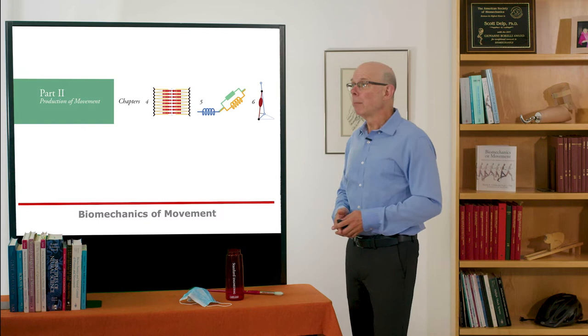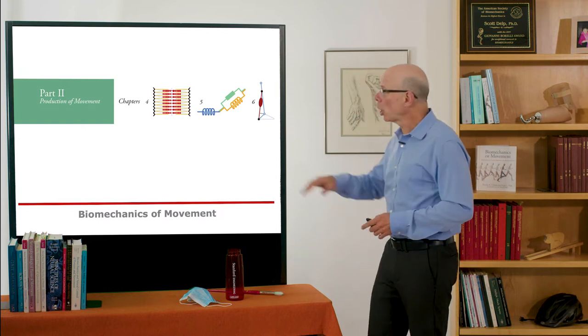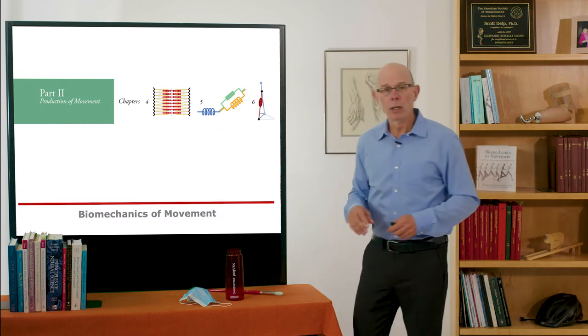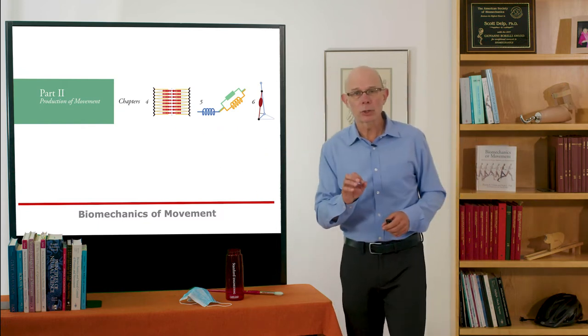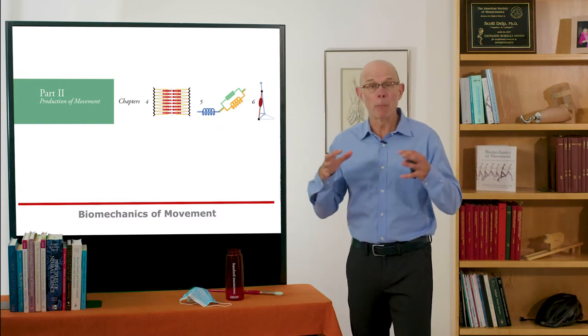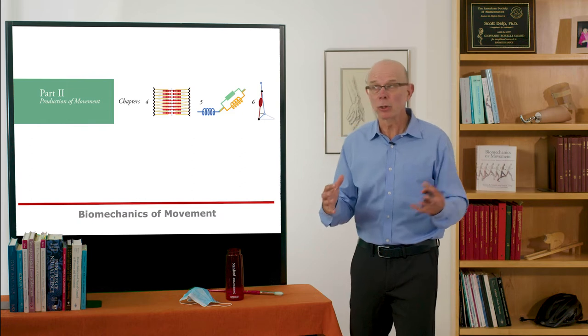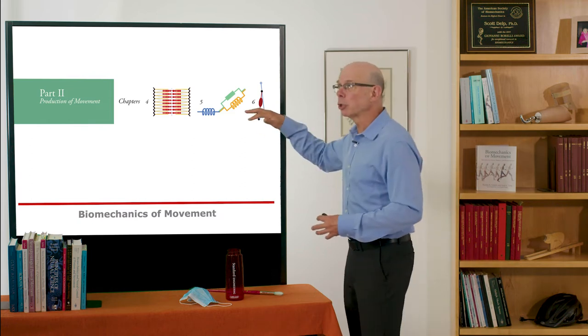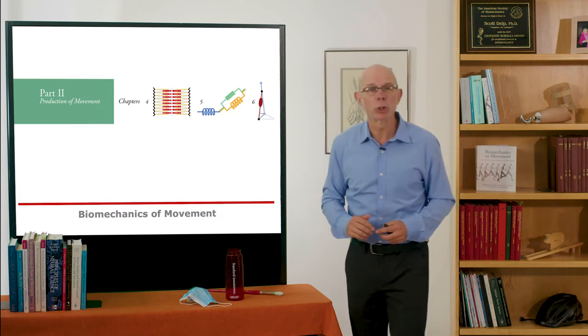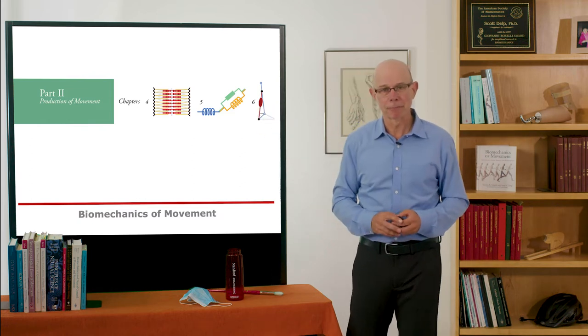In part two, we talked about the production of movement, the biology of muscle, mathematical modeling of muscle, and in chapter six, the geometry of muscle.